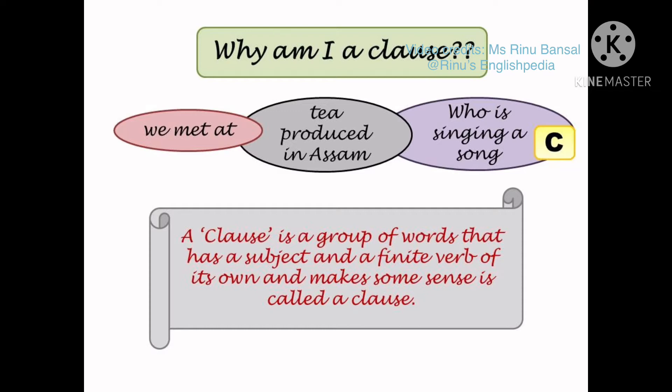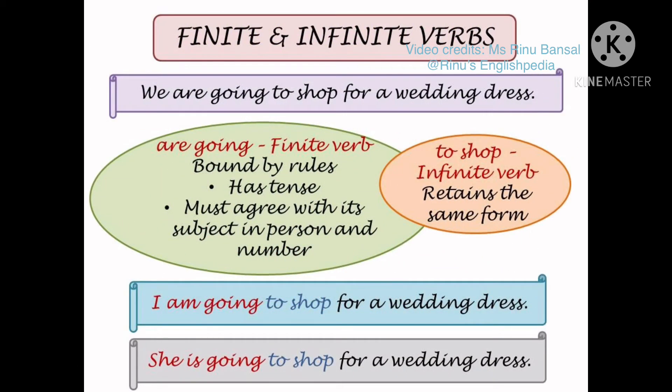A clause is also a group of words that makes some sense. The crucial difference between a phrase and a clause is that a clause must have a subject and a finite verb of its own. In our examples, we, the, and who are the subjects, whereas met, produced, and singing are the finite verbs.